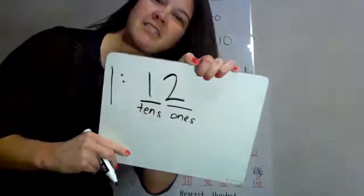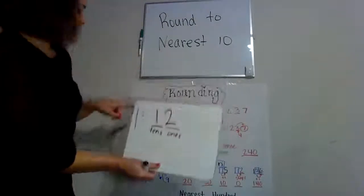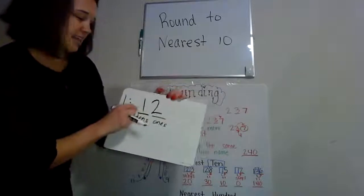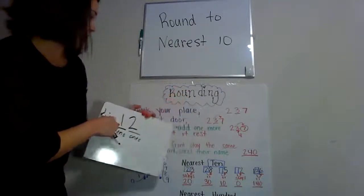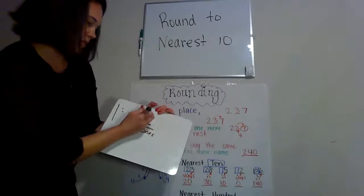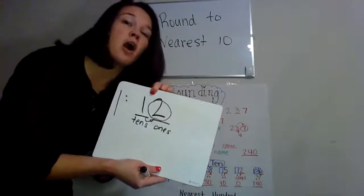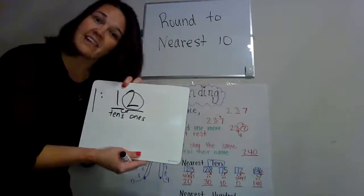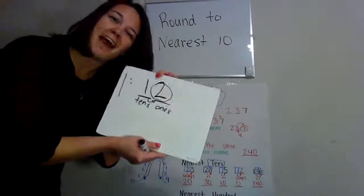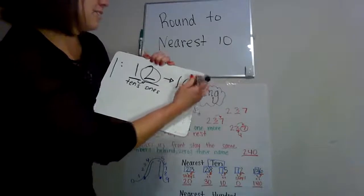So the two is in the ones place. If we want to round to the nearest tens, then we have to mark our place. So we're rounding to the nearest tens — look next door. Who's next door? Number two. Is it five or greater? No. Four or less? Yes. So we will let it rest. The number 12 rounds down to 10.